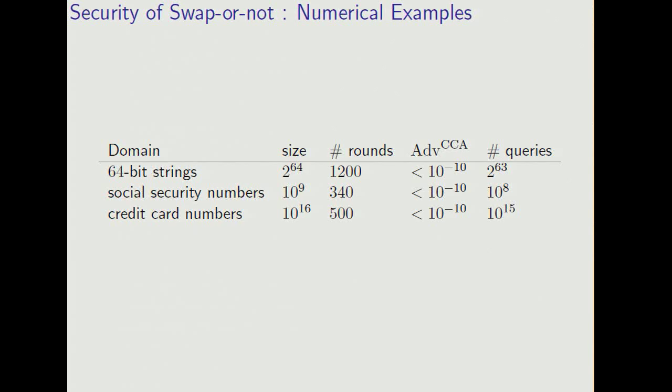And for social security numbers and credit card numbers, 340 rounds and 500 rounds are enough to make the advantage small, even if the number of queries is close to the size of the whole domain.